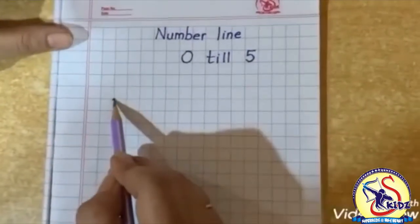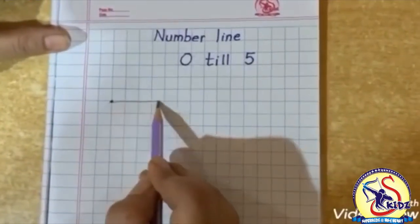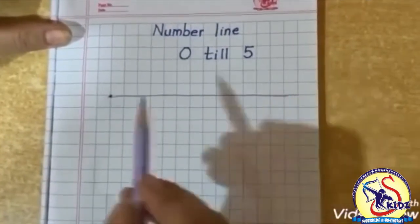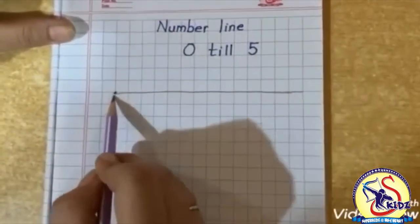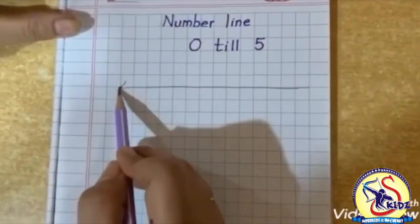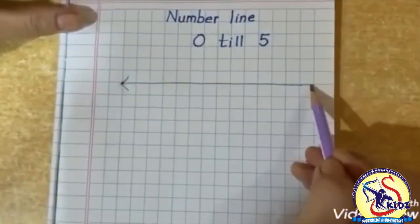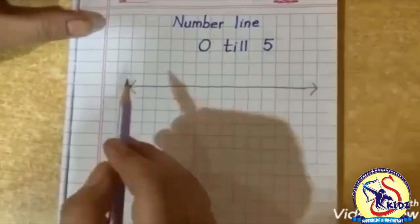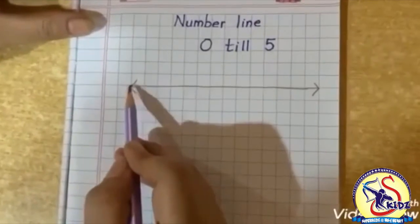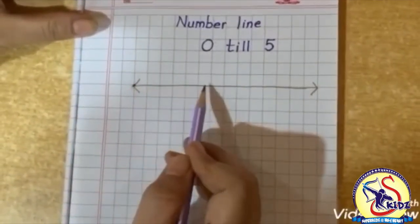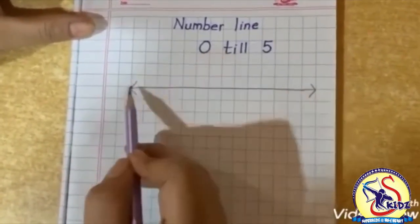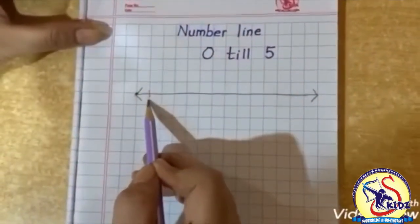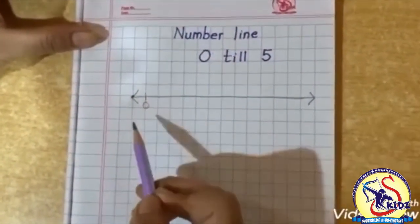From dot, we will draw a straight sleeping line. And from dot, we will draw an arrow. At the end of the line also, we will draw an arrow. Now from dot, we need to count boxes. First number is 0, so at the very first box, we will write here number 0.